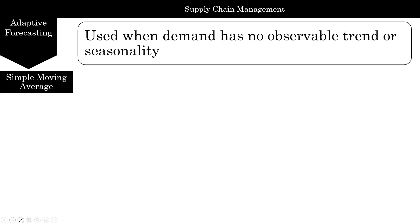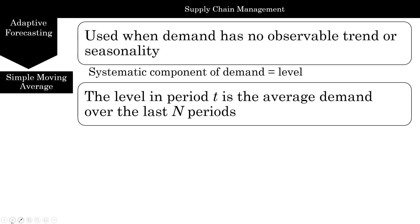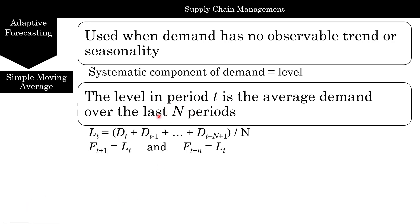The first forecast method is simple moving average — the easiest and most basic, used by many companies. When demand has no observable trend, you plot a scatter plot and see random fluctuations but no real trend or seasonality, so you can use simple moving average. The systematic component of demand is just level, and level in period T is the average demand over the last N periods. You decide whether to use a four-period, three-period, or two-period moving average.